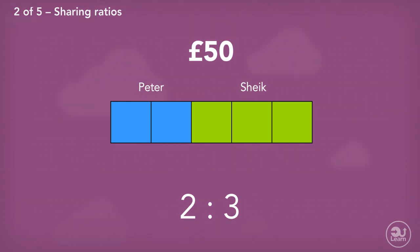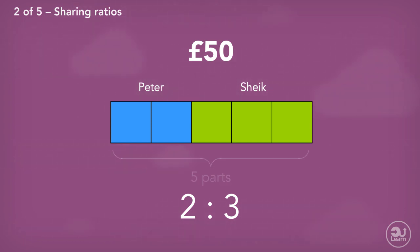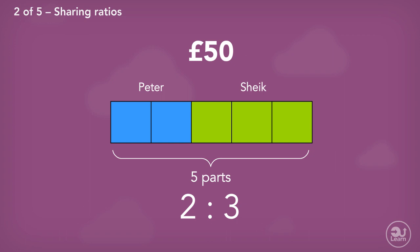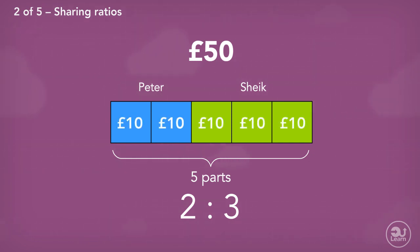The key for all of these questions is to find out what one part in our ratio is worth. First, we find out how many parts we have in total. Here, we have a ratio with two parts and three parts, which means that we have five parts in total. We are also told that the total amount is 50 pounds, which means that 50 pounds is equal to five parts. We can then find out what one part is worth by dividing 50 by five — one part is worth 10 pounds.